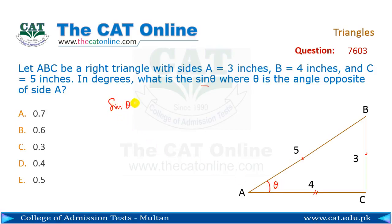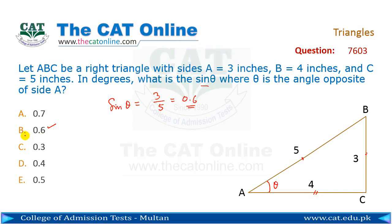Sine theta equals opposite over hypotenuse. The opposite side is 3 and the hypotenuse is 5, so this is equal to 3/5, which is 0.6. So sin of theta is equal to 0.6, which is given in option B. This is the correct answer: Option B.